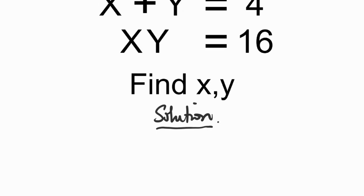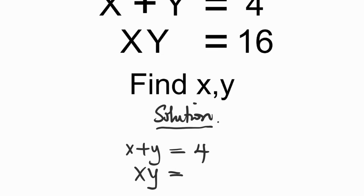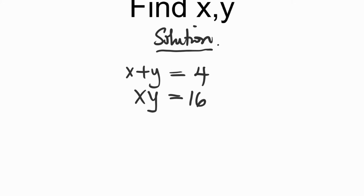We have x plus y equals 4 — this is equation 1 — and x times y equals 16 — this is equation 2.